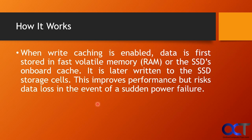So how does it work? When it's enabled, data is first stored in your RAM or the SSD's onboard cache. Not all SSDs will have this onboard cache — some of the budget ones are not going to have it, and it's going to rely more on your system memory. This can improve performance, but there are risks of data loss in the event of a sudden power failure, because if you have this information in RAM and your power goes out before it gets written to the disk, it's going to be lost.